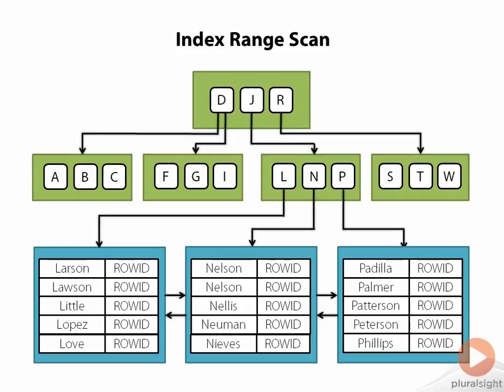The range scan in the name indicates that this operation can, and most often will, match multiple rows. For example, in this slide, querying the table using the last name of Nelson will result in multiple rows being returned. What this means is that this operation will return multiple row IDs, each one pointing to a row of data that matches the index lookup operation.